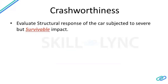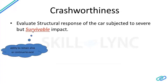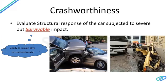Crashworthiness is evaluating the structural response of a car when subjected to severe but survivable impact. You can't design a car to survive a crash at 100 miles per hour, which is unrealistic; it means a realistic-speed survival impact where automotive OEMs try to build a structure that saves human life. Survivability is the ability to remain alive — though injuries still coexist with a crash.